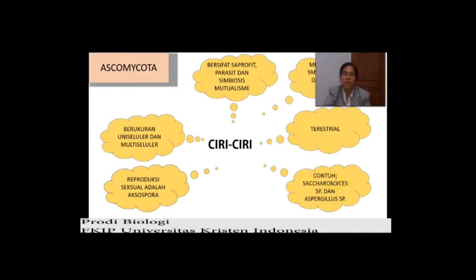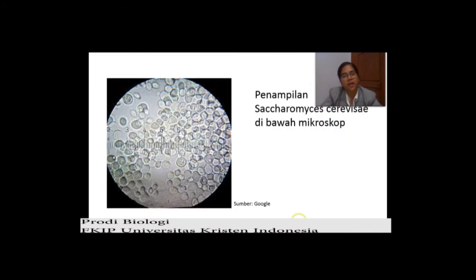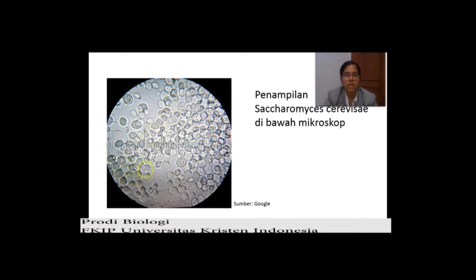Kedua jamur ini merupakan jamur yang menguntungkan bagi kehidupan manusia. Saccharomyces ini untuk bahan pangan. Aspergillus ini untuk pembuatan tauco sebagai makanan. Ini dia Saccharomyces cerevisiae di bawah mikroskop — berarti dia berukuran mikroskopis, hanya dapat dilihat menggunakan mikroskop. Kalau kita lihat gambarnya, bulat-bulat ini adalah jamurnya. Jadi bentuk-bentuk jamur itu banyak — tidak hanya benang-benang seperti di tempe, kalau ini dia bulat-bulat bentuknya.